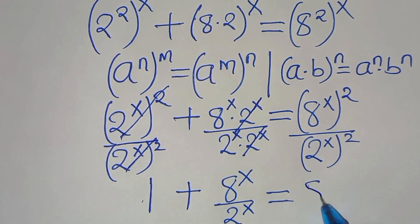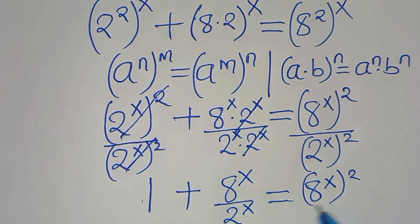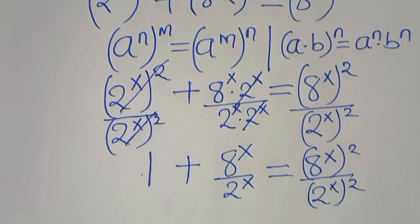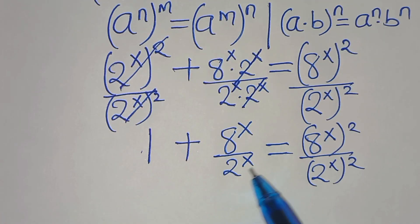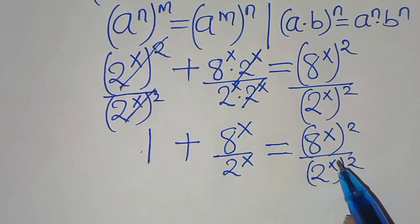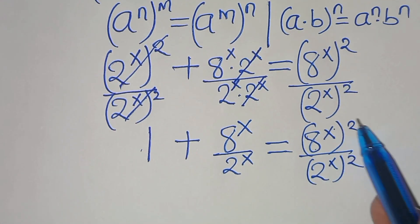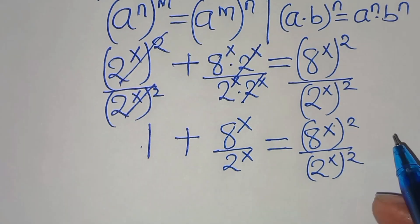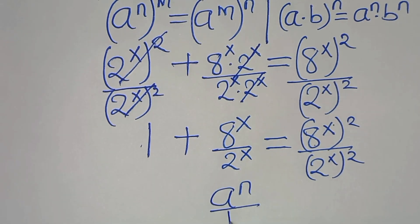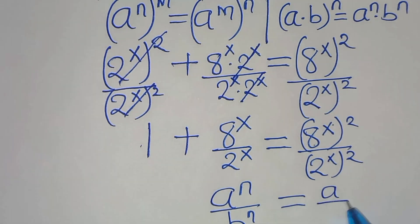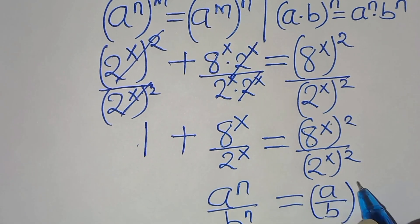After simplifying, we have 8 to the power of x divided by 2 to the power of x, and on the right side 8 to the power of x squared divided by 2 to the power of x squared. This is in the form a to the power of n divided by b to the power of n, which we can express as (a over b) raised to the power of n.